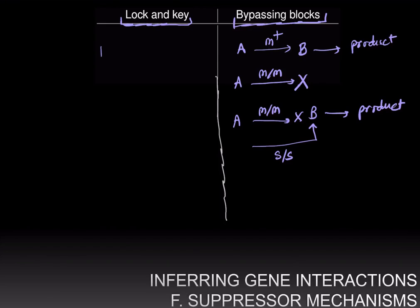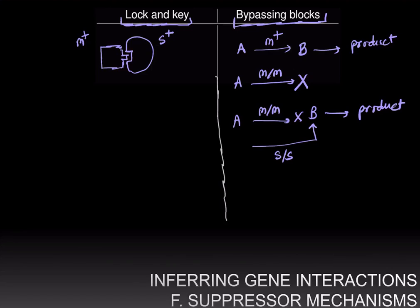In the lock and key mechanism, let's say the wild-type allele of a gene makes a protein with a particular shape that binds to another protein encoded by the wild-type allele of the suppressor S+. These two proteins bind to each other and fit like lock and key, and this interaction — this binding — is necessary to perform the wild-type function of this protein complex.